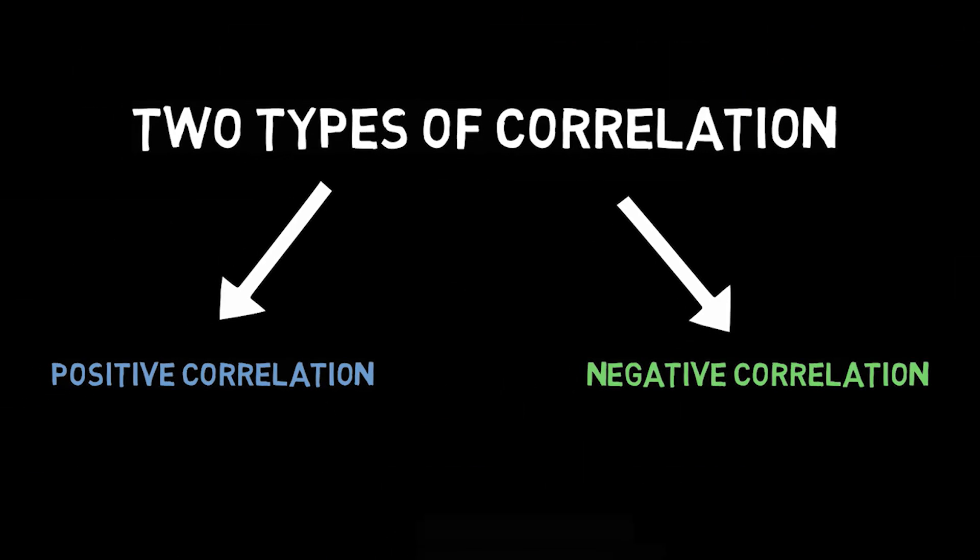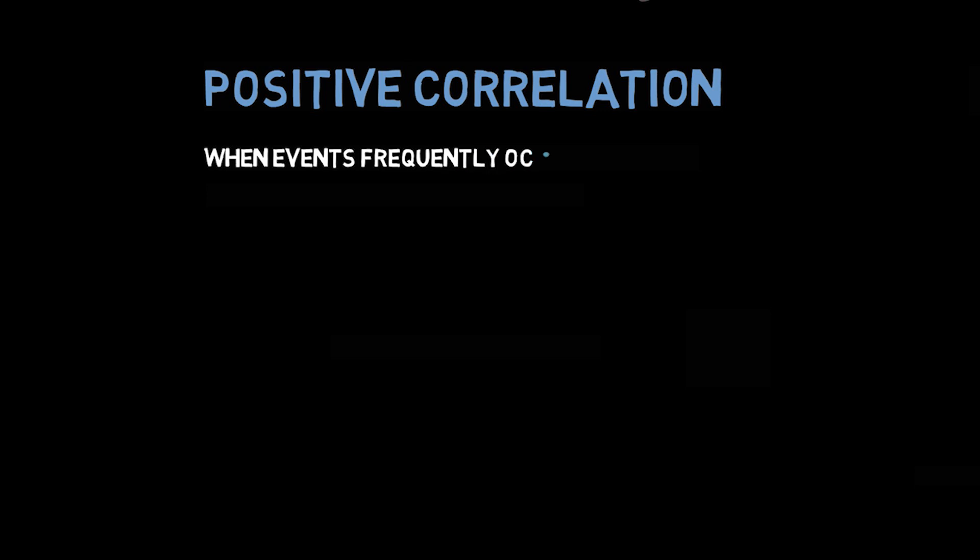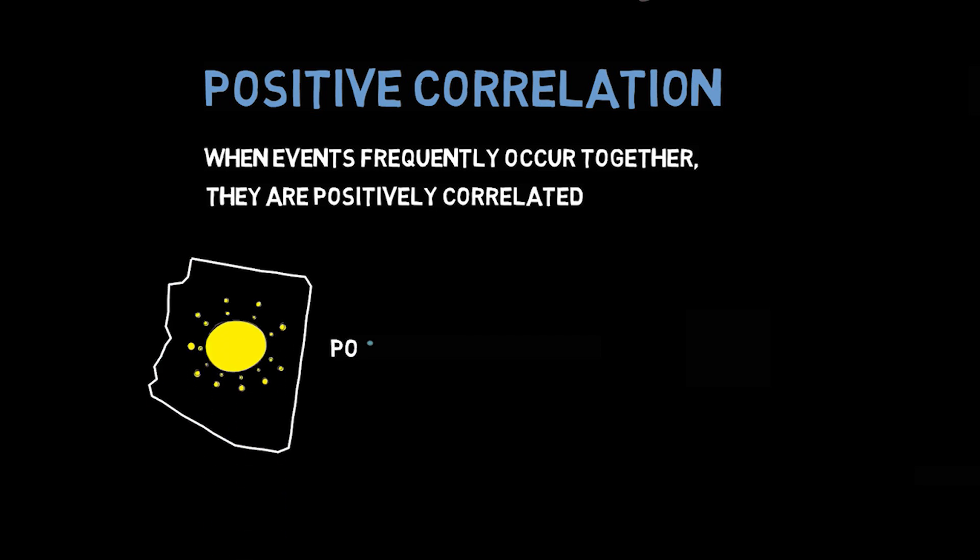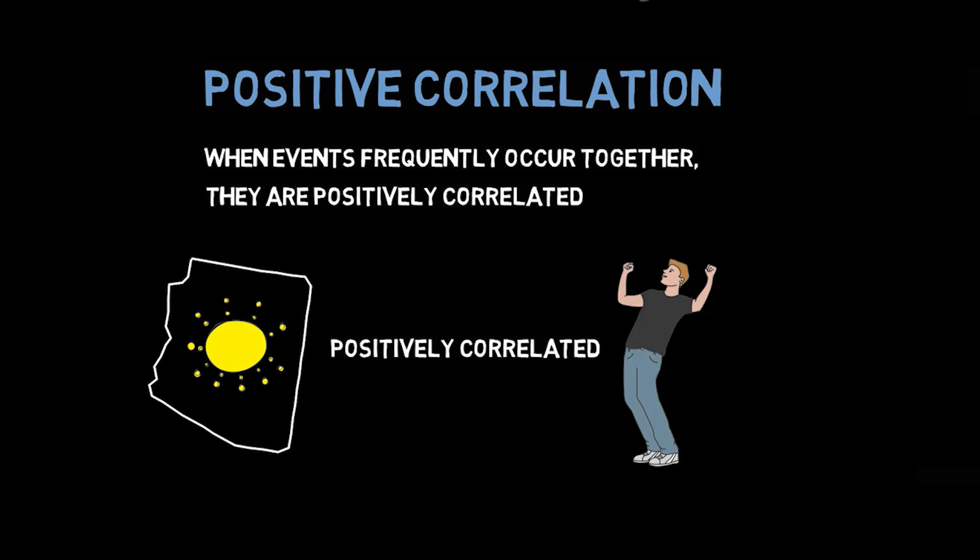In the next video, we'll discuss how these types of correlations specifically relate to different types of causation. But for now, let's just introduce them. When events frequently occur together, like in the examples above, they're positively correlated. If two events are positively correlated, then when one event is present, the other is often present as well. In our first example, it being a sunny day in Arizona is positively correlated with Andy succeeding on his math test.